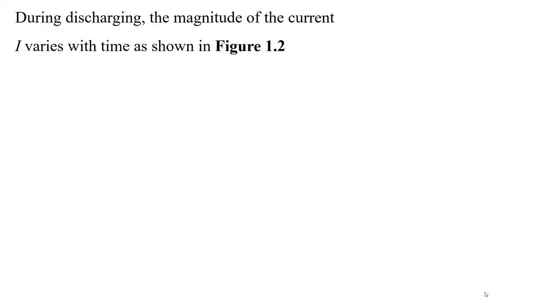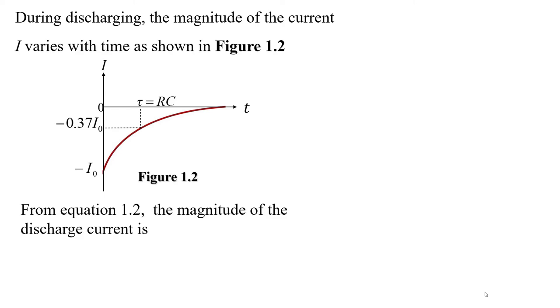During discharging, the magnitude of the current I varies with time as shown in figure 1.2. From equation 1.2, the magnitude of the discharge current is I equals to negative I not E to the power of negative T over RC. We refer this as equation 1.3.